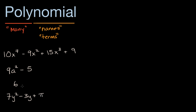So if these are examples of polynomials, what are examples of things that are not polynomials? Well, if I were to replace the seventh power with the negative seventh power — so if I were to write 10x to the negative seventh power minus nine x squared plus 15x to the third power plus nine — this would not be a polynomial. So you might be sensing a rule here: you have to have non-negative powers of your variable in each of the terms. And I just used the word 'terms', so let me explain it, because it'll help me explain what a polynomial is.